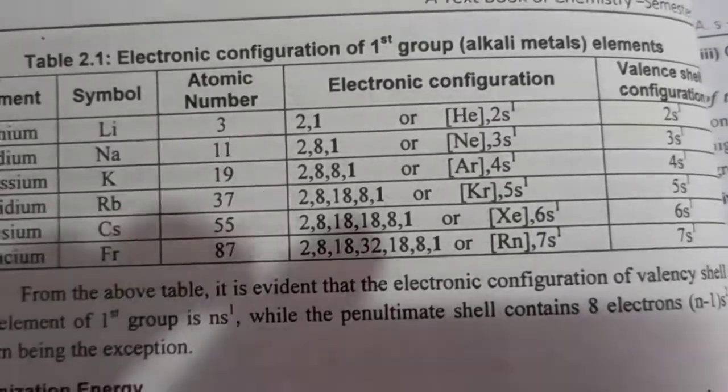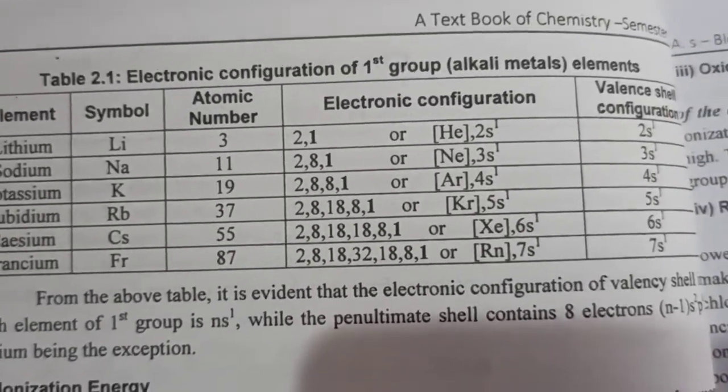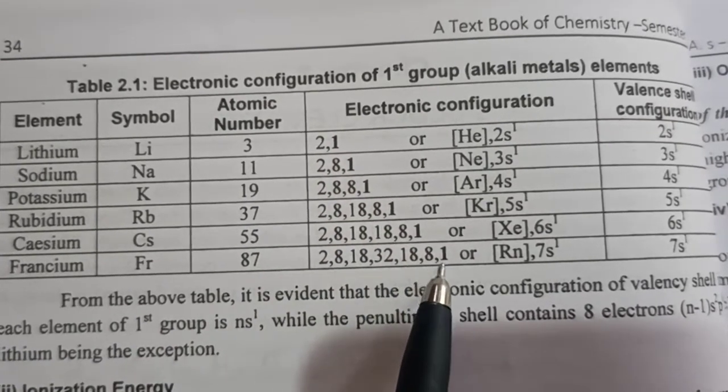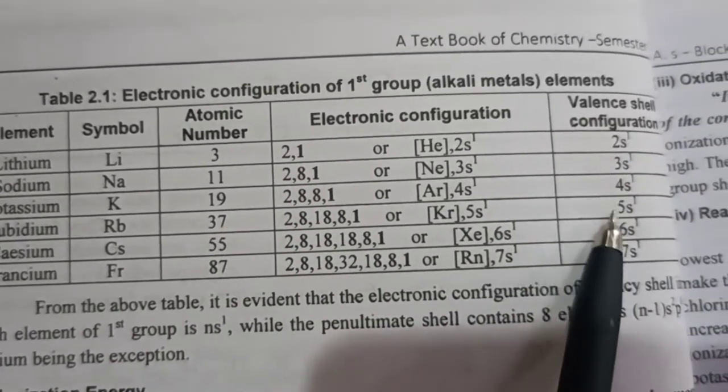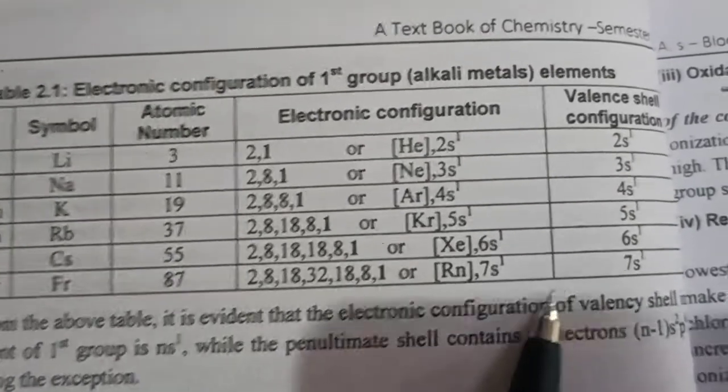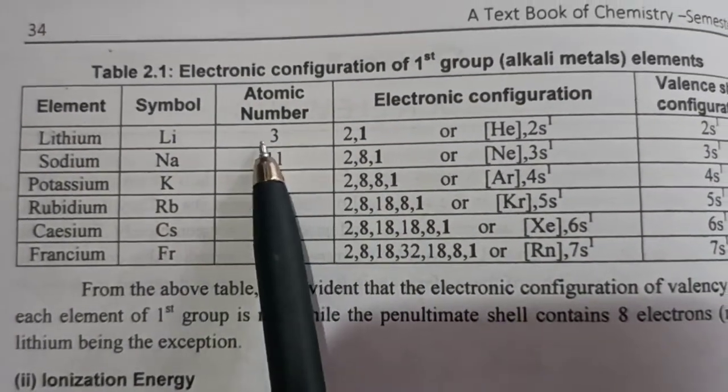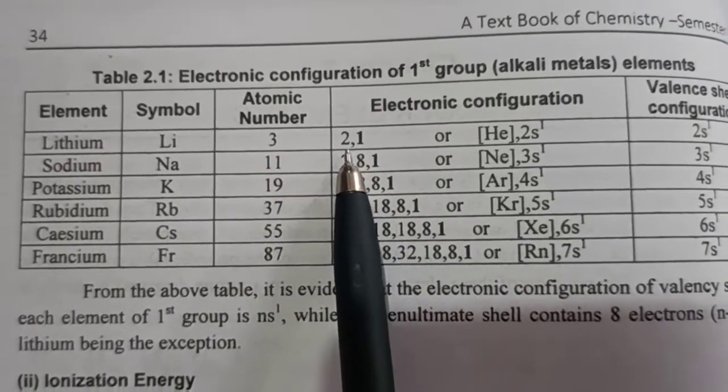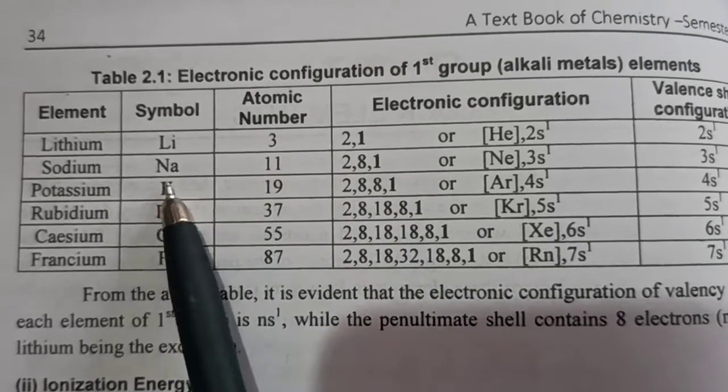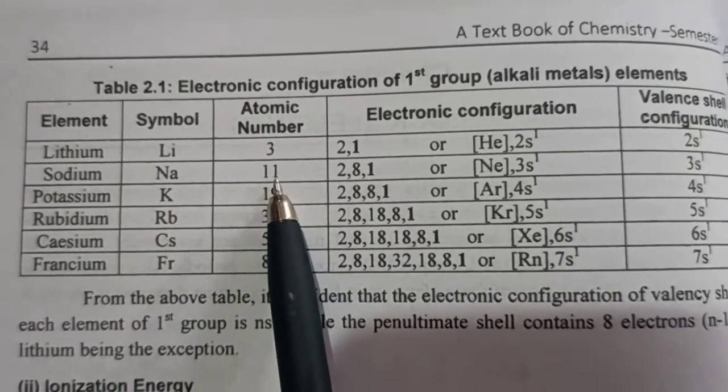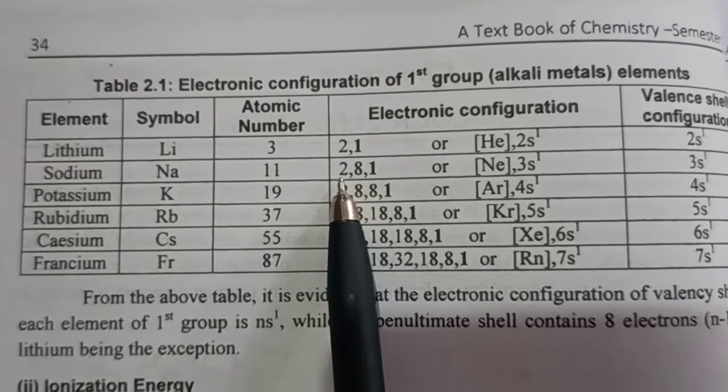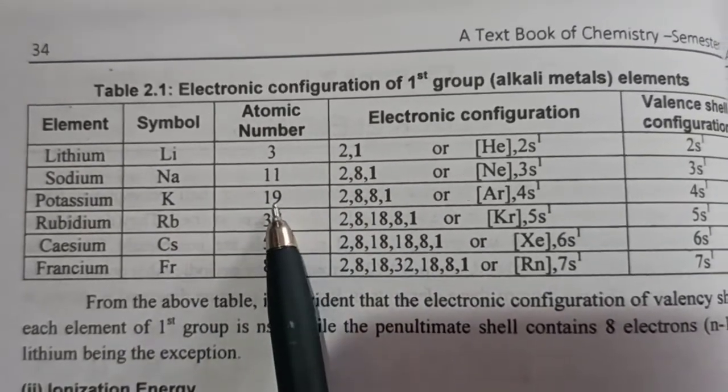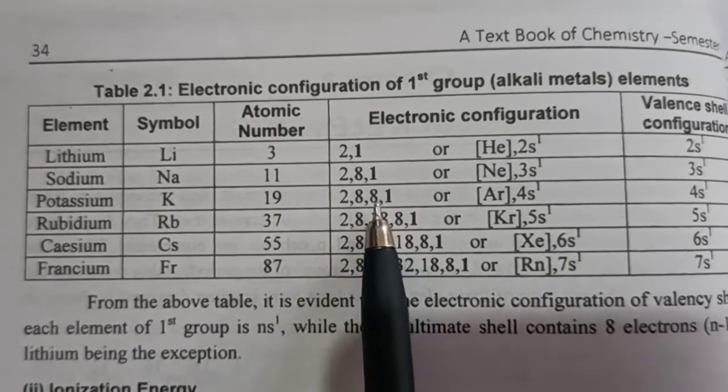If you look at the electronic configuration of these elements, you will come to know that in every case there is one electron which is present in the S atomic orbital. See here, in Lithium, the electronic configuration will be 2,1 - that is only 3 electrons. Sodium has 11 electrons, therefore electronic configuration will be 2,8,1. Potassium has 19 electrons, it will be 2,8,8,1.